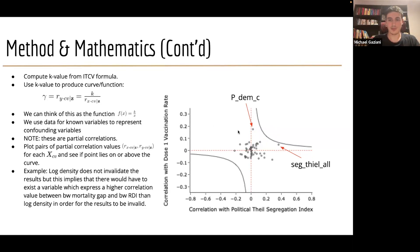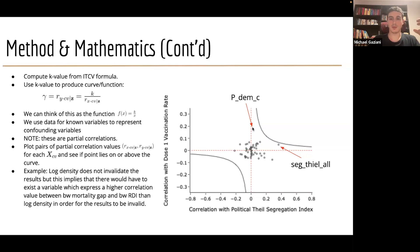We take the observable confounding variables we know of and plot a scatter plot of all their partial correlation coefficients, then see whether they fall on the line or above it — which would invalidate our results. We plotted it for all 51 covariates, and none of them fall along the line. The closest we get is the percentage of Democratic voters in the county and racial segregation using the Theil index. The known data gives us a benchmark: an unknown variable would have to have a partial correlation pair greater than something like percent Democrat in the county.